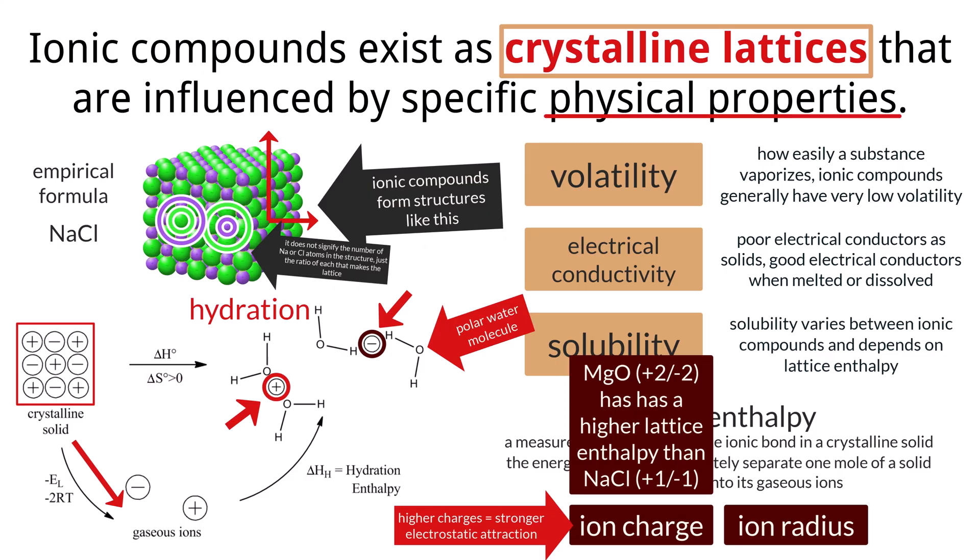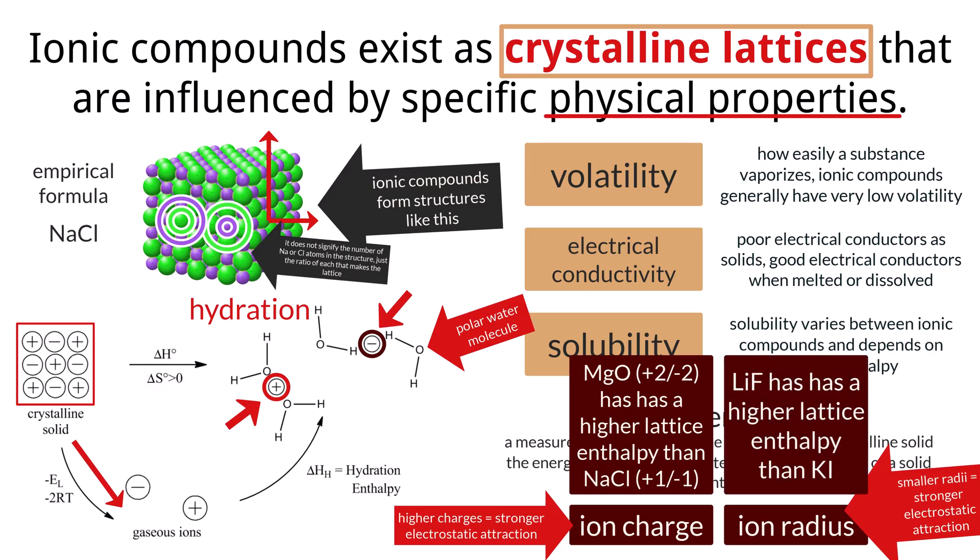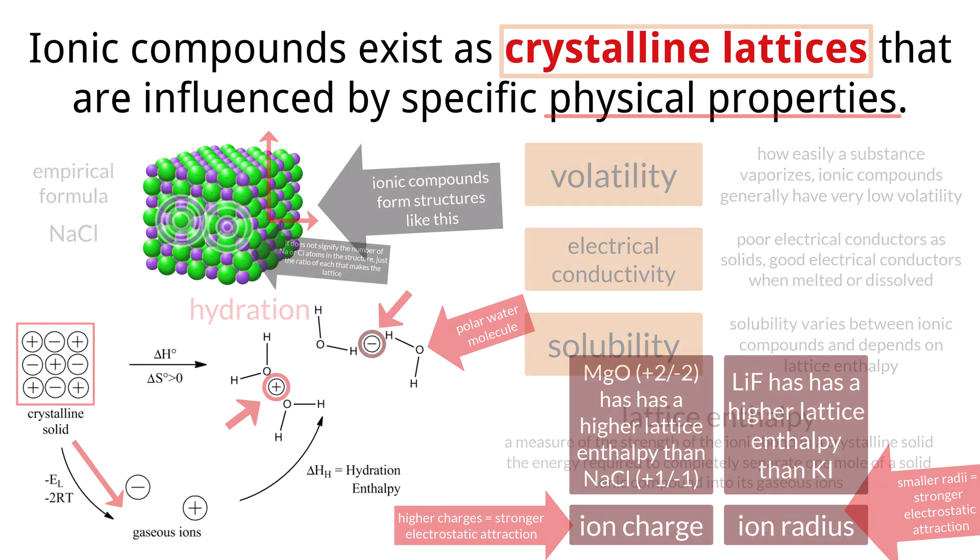Similarly, ion radius plays a role. Smaller ions can get closer to each other, leading to stronger electrostatic attractions and a higher lattice enthalpy. Conversely, large ions have their charges more spread out, resulting in weaker attractions and lower lattice enthalpies. For instance, lithium fluoride has a higher lattice enthalpy than potassium iodide. Because lithium and fluoride ions are smaller than potassium and iodide ions, allowing for a closer interaction and stronger attraction.